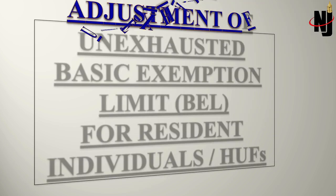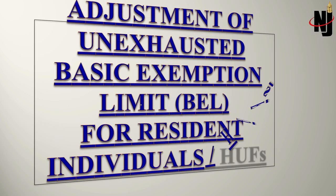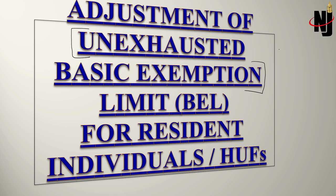Let's understand the concept of adjustment of unexhausted basic exemption limit for resident individuals and HUF. Unexhausted means remaining unutilized or remaining unexhausted against normal income. Whenever the assessee is a resident individual or HUF, the basic exemption limit is to be adjusted against normal income first. Normal income is the one which is taxable as per slab rate.